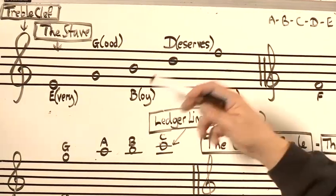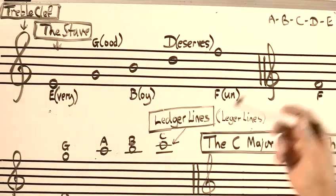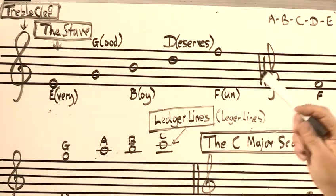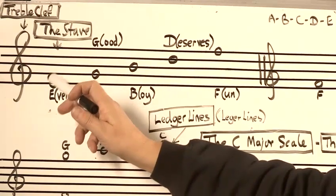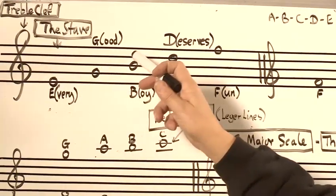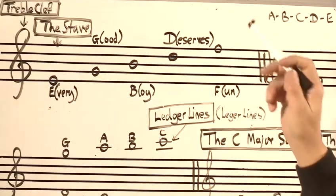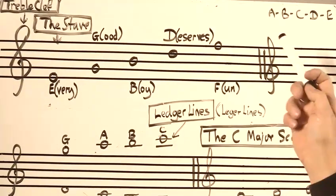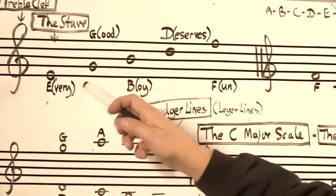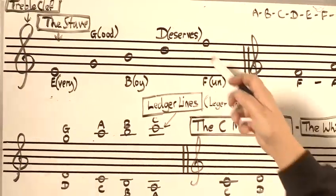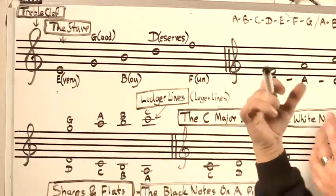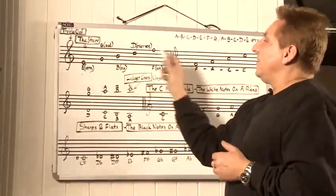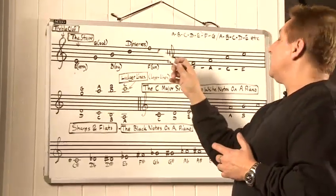So the note names which are on the stave, contained on the lines and in the spaces, are these ones here: E, G, B, D and F. Now some people use these terms to try and remember these, which is 'Every Good Boy Deserves Fun.' It's just a thing to try and remember initially, until you get used to these note names — all the names which are on the lines.